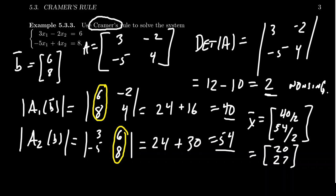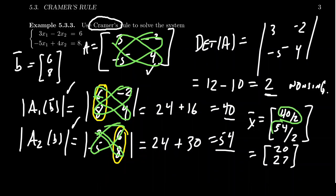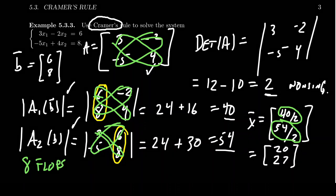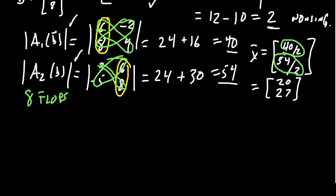For this 2×2 problem we had to calculate three 2×2 determinants. Each 2×2 determinant requires two multiplications, so three determinants means six multiplications. Adding the quotients at the end (which are like multiplications by the reciprocal), we end up with about 8 flops total. In terms of computational difficulty, we count multiplications since addition is cheap but multiplication does cost time.